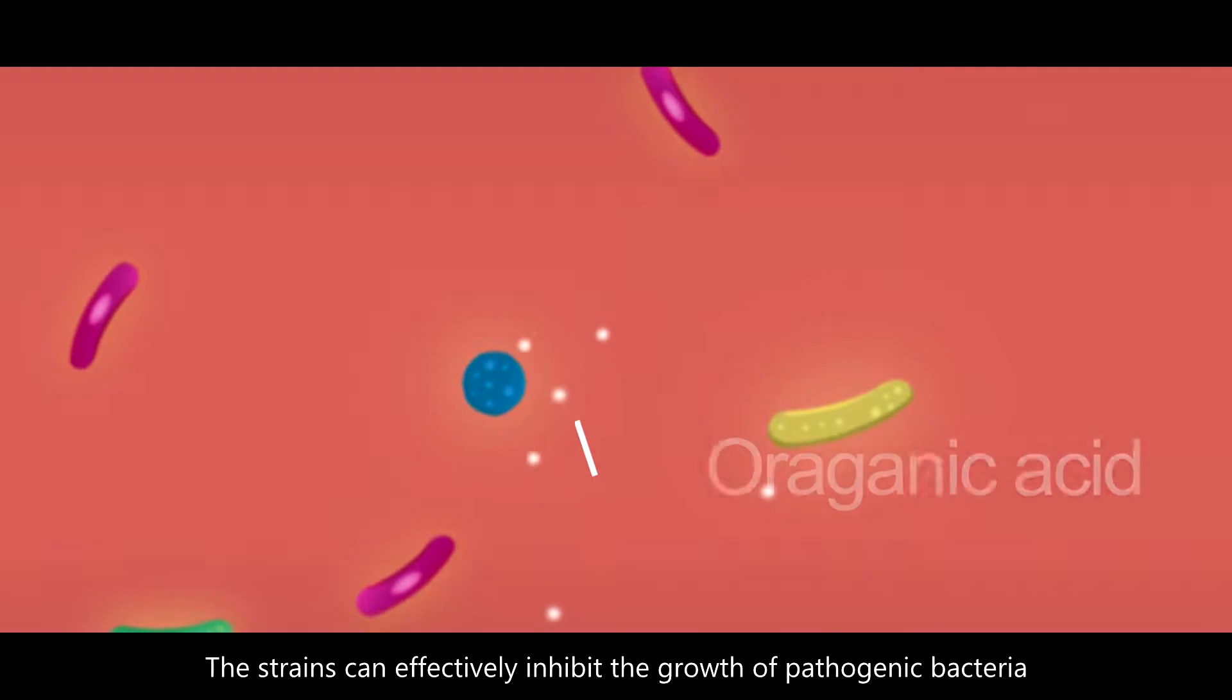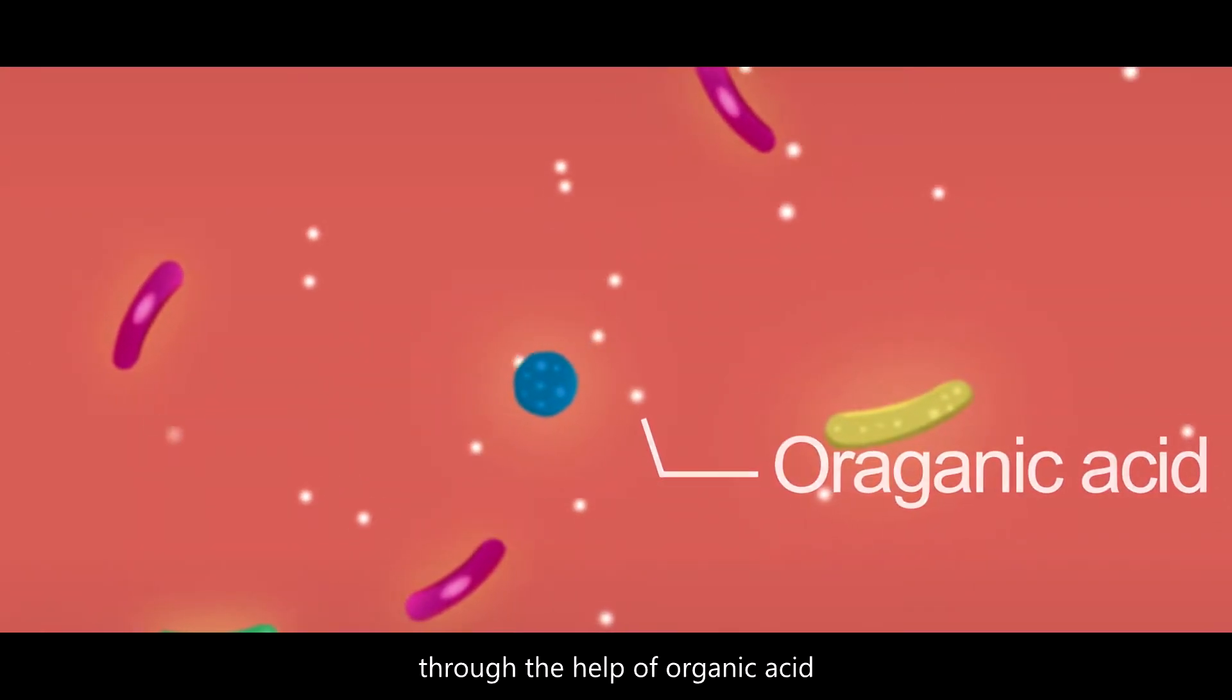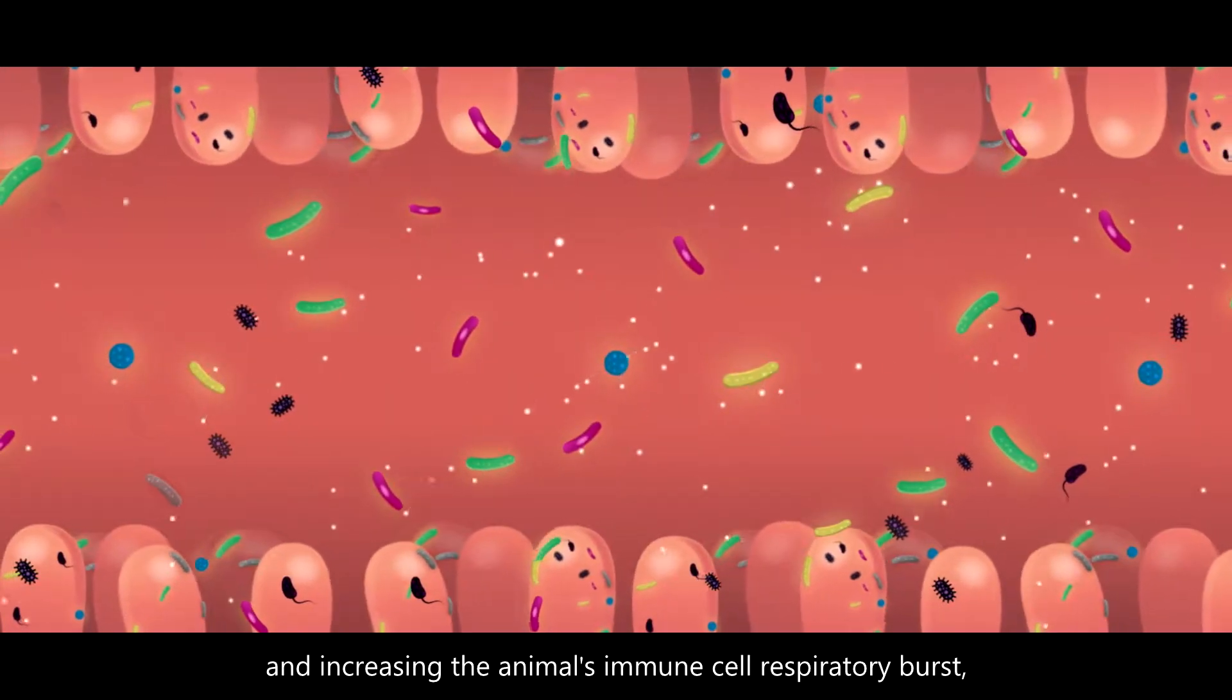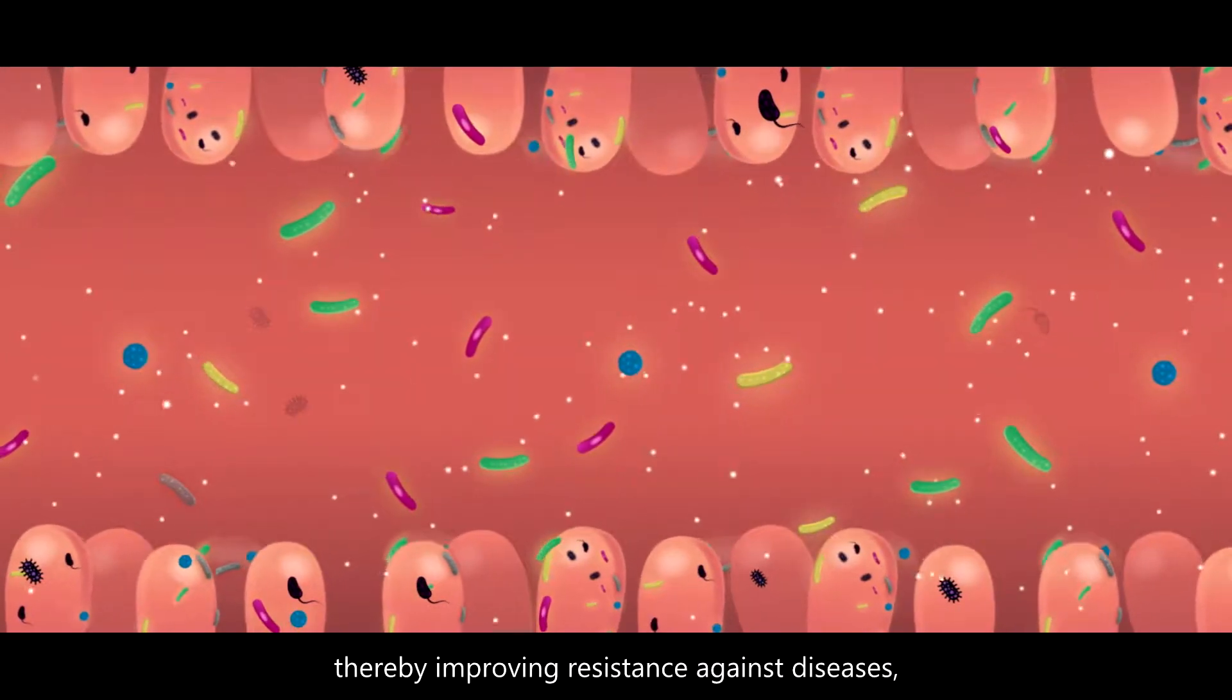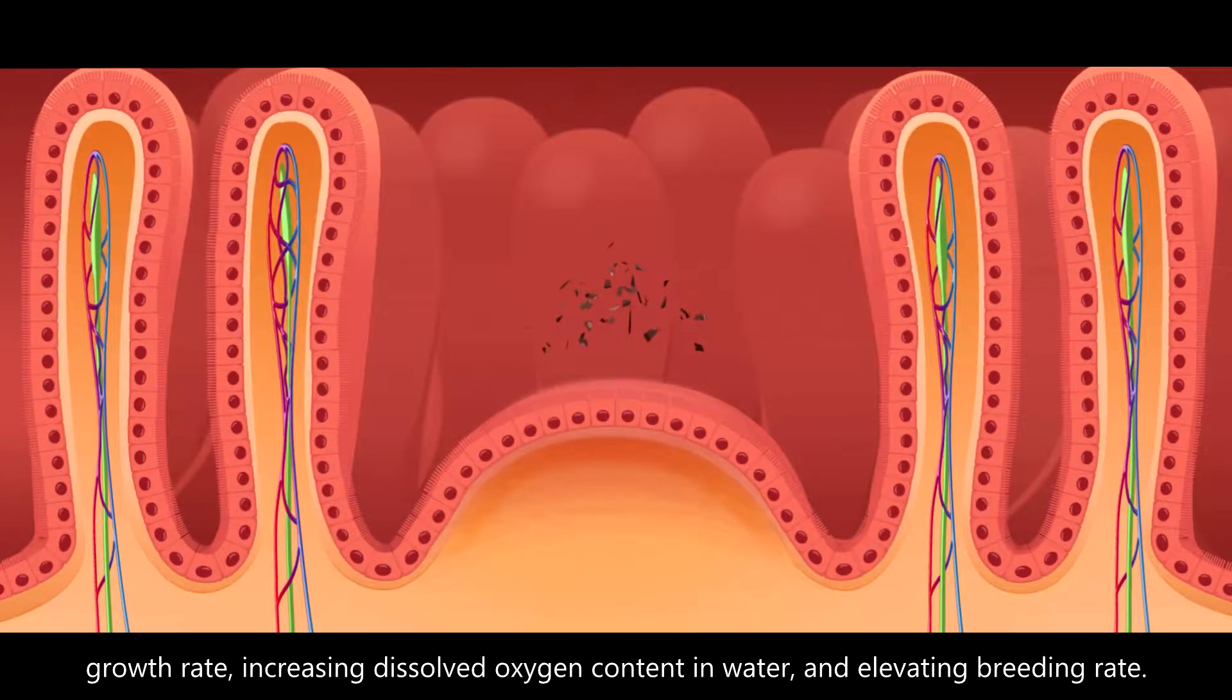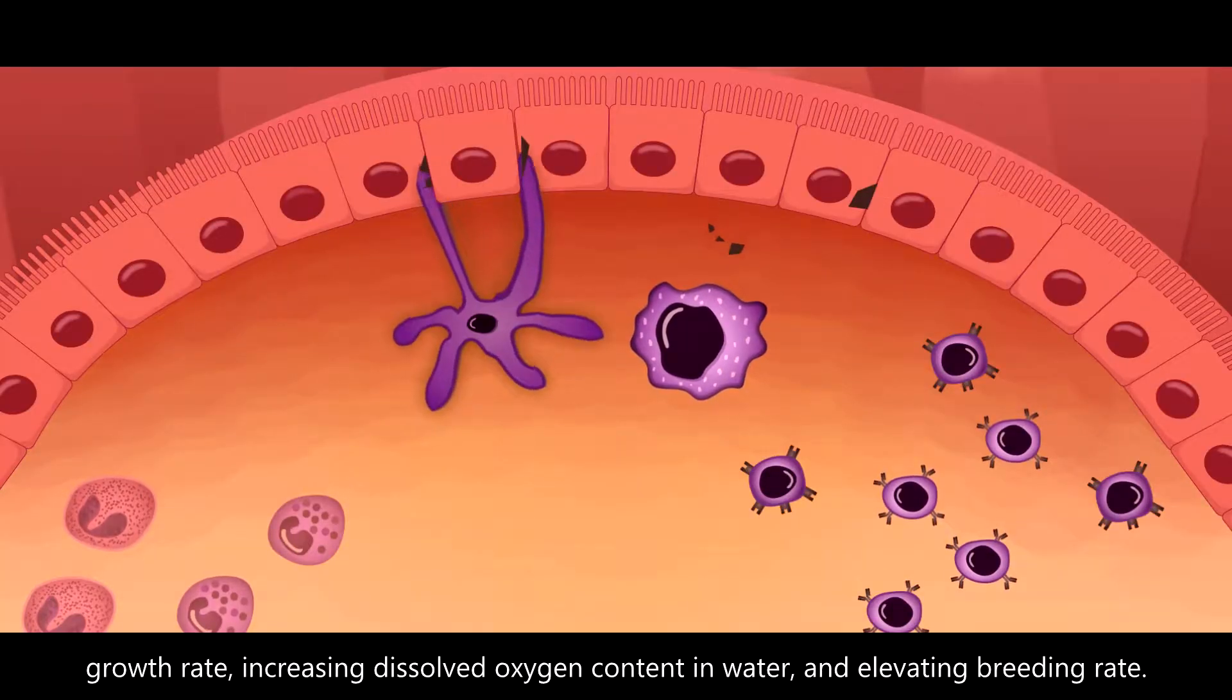The strains can effectively inhibit the growth of pathogenic bacteria through the help of organic acid and increasing the animal's immune cell respiratory burst, thereby improving resistance against diseases, growth rate, increasing dissolved oxygen content in water, and elevating breeding rate.